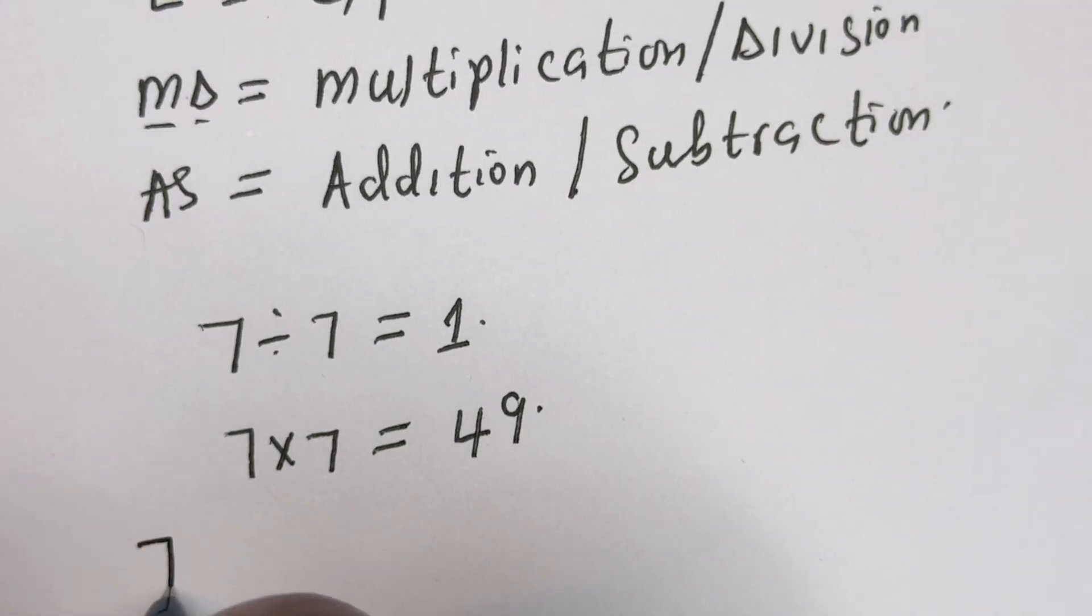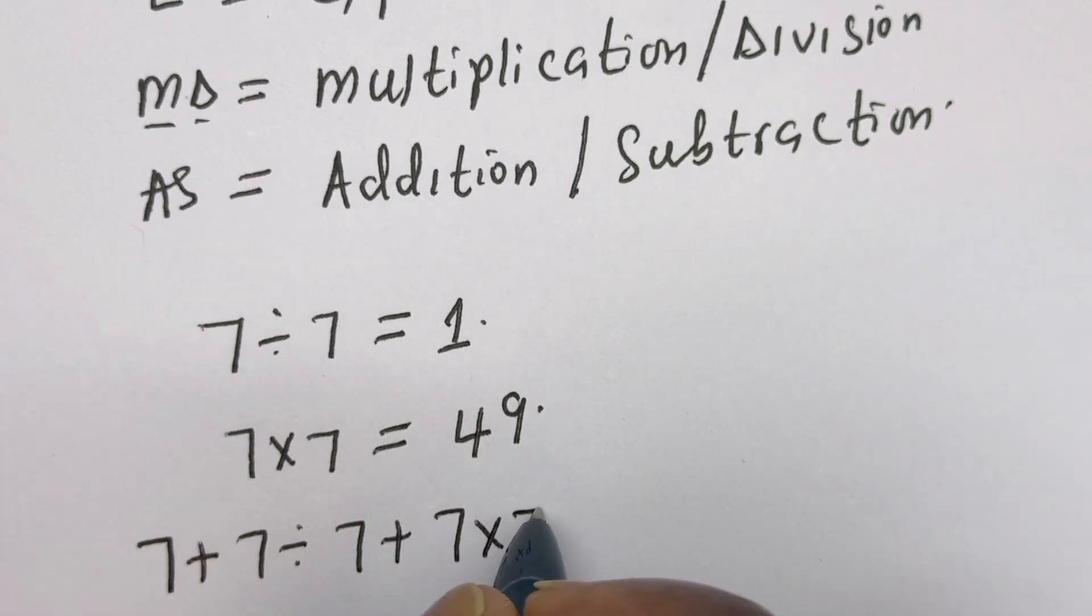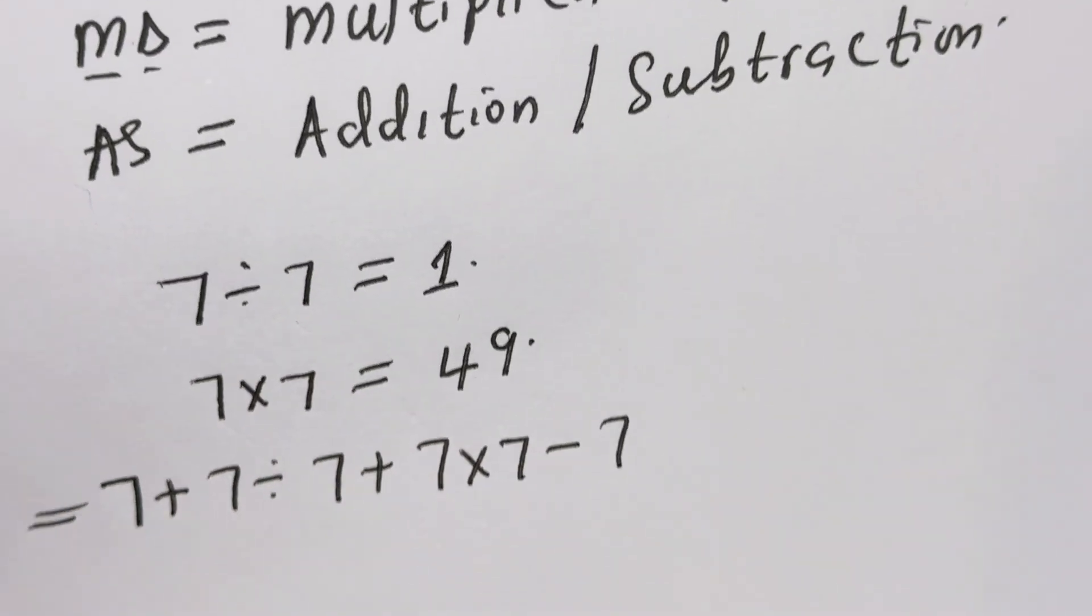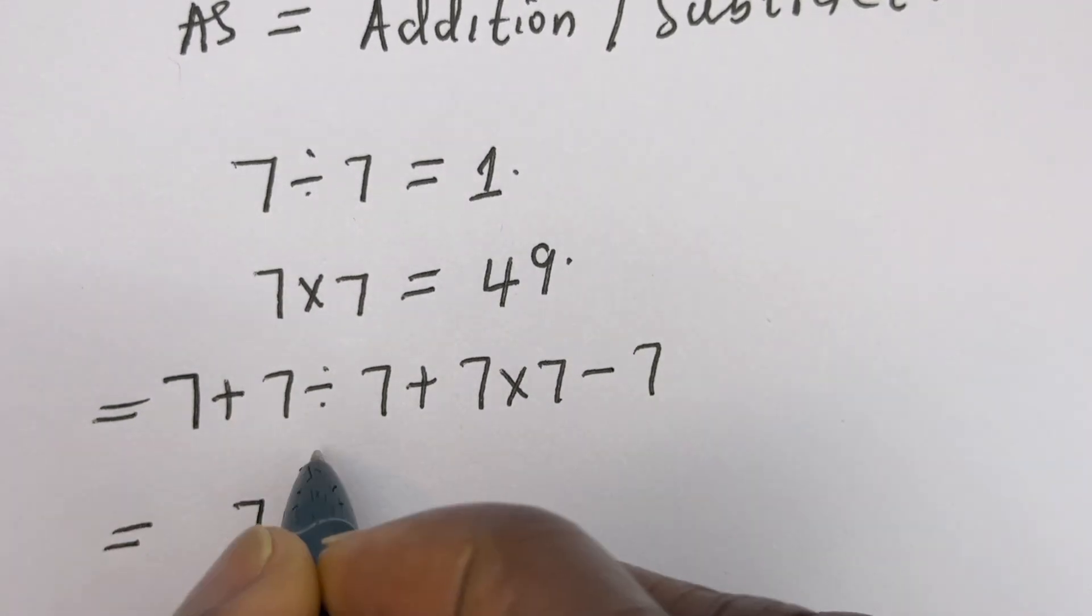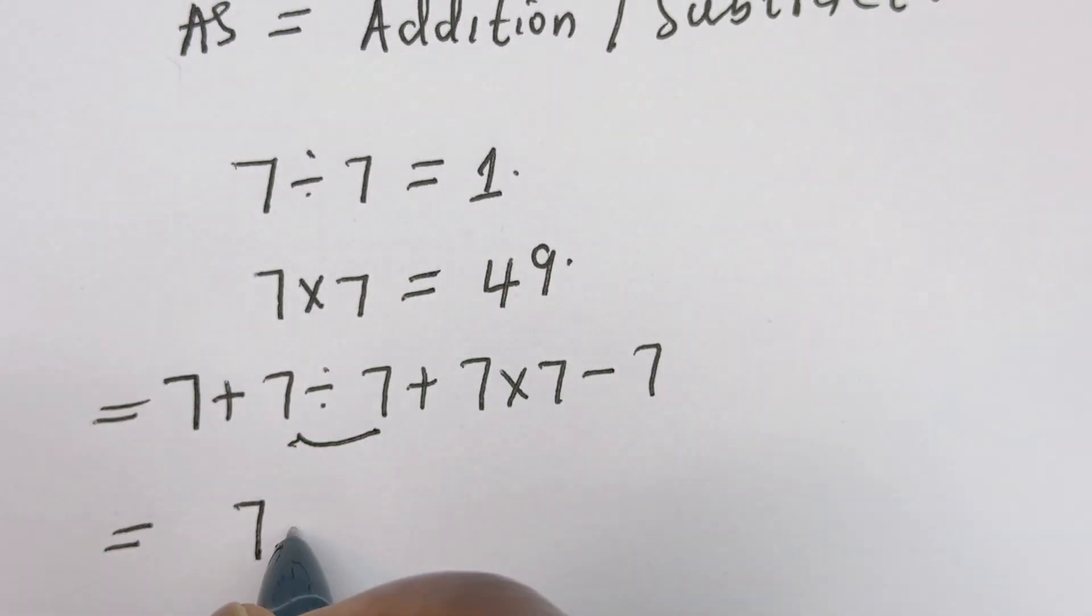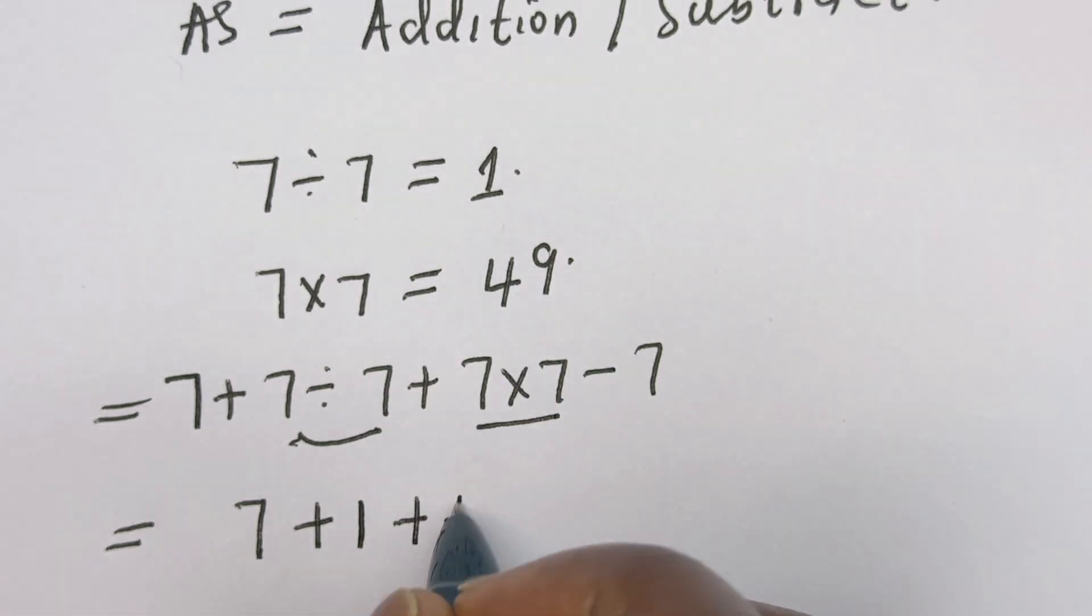We have 7 + 7 ÷ 7 + 7 × 7 - 7. This equals 7 + 1 + 49 - 7.